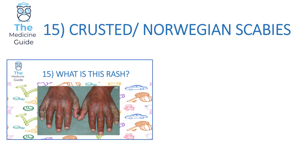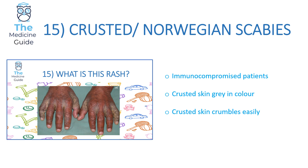Rash 15 is crusted scabies, also known as Norwegian scabies, occurring only in immunocompromised patients — for example those with HIV, leukaemia, or undergoing chemoradiotherapy. This is a far more severe form than regular scabies. Rather than linear burrows, these patients have crusted grey areas of skin that crumble and flake off very easily.